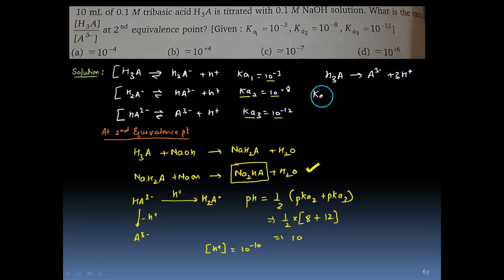For this, the overall dissociation constant will be Ka1 into Ka2 into Ka3. That will be equal to [A³⁻][H⁺]³ upon [H3A].